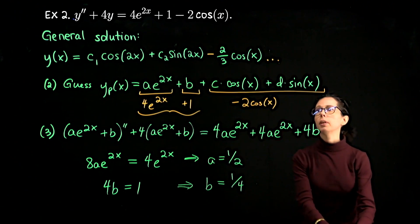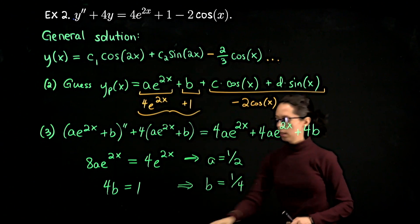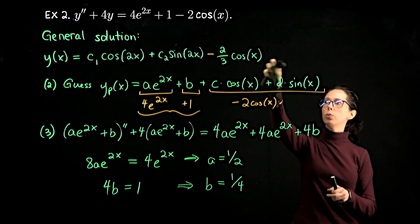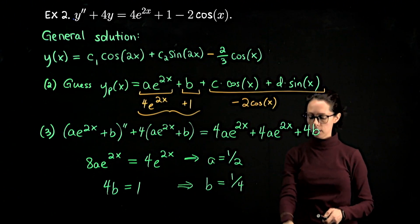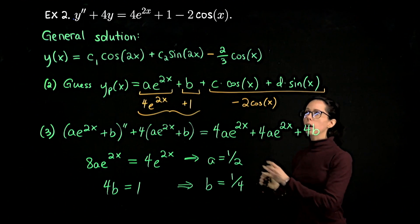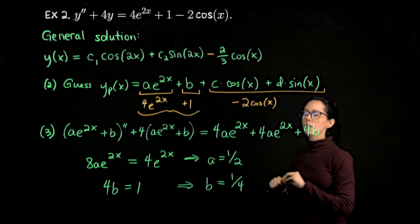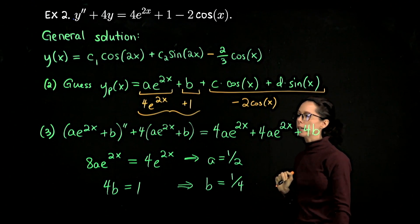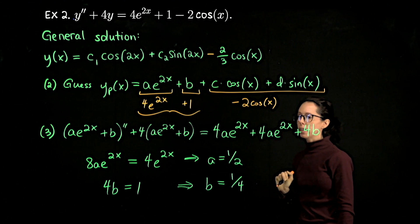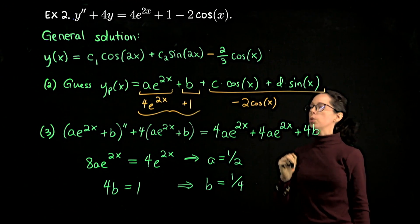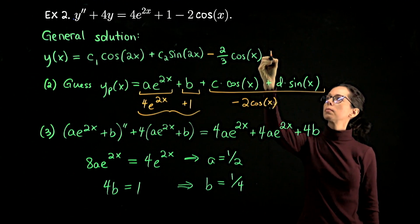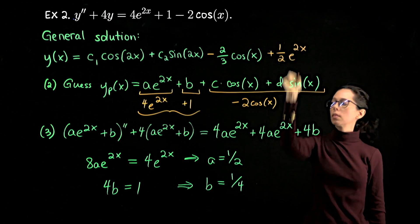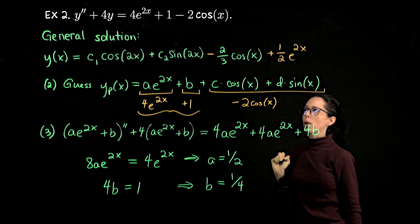That wraps up this example. To the general solution at the top, we just add the new components. By adding to our forcing function, we pick up new terms: one-half e to the 2x plus one-fourth.